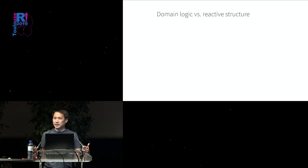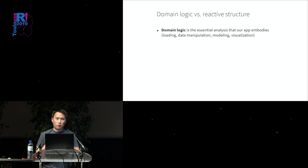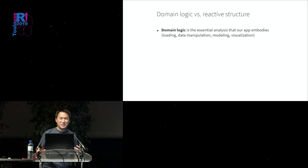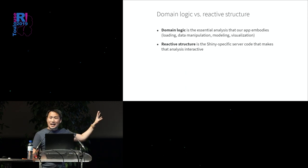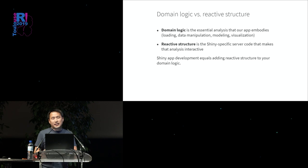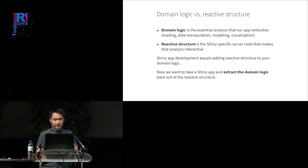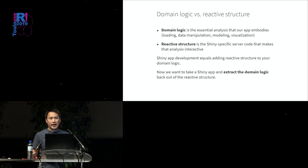Before we continue, I want to define a couple of terms. 'Domain logic' is the essential analysis that our app embodies — the actual R code that performs the analysis. In software engineering we usually call this business logic, but here we'll call it domain logic. Everything that's not domain logic — the stuff relating to Shiny and interactivity — we'll call 'reactive structure.' Creating a Shiny app generally starts with analysis in regular R, then you add reactive structure to make it interactive. Today we want to go the other direction: extract the domain logic back out of that Shiny code and end up with something reproducible.